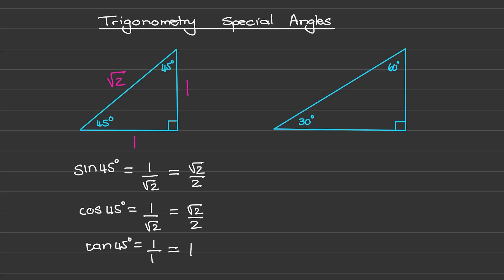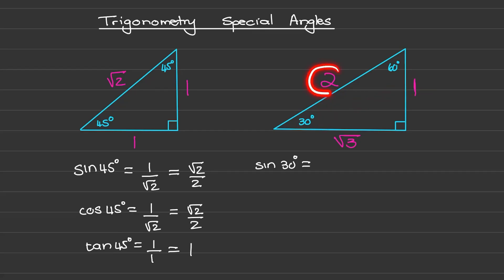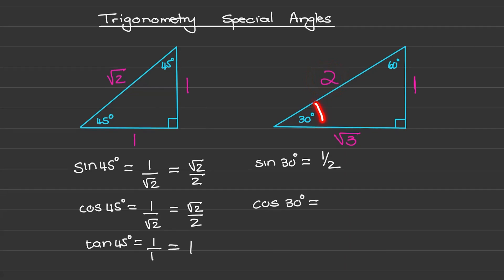The length of one side is one and the length of the hypotenuse equals two. We can use Pythagoras to find the length of the missing side. The sine of 30 degrees is the opposite, which is one, over the hypotenuse of two, so that is one half. For the cosine of 30 degrees I have the adjacent side divided by the hypotenuse, so that is square root of three over two.